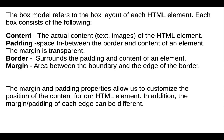The box model refers to the box layout of each HTML element. Each box consists of the following: first is content — the actual content like text or images of the HTML element. Next is padding — the space in between the border and content of an element. Next is border — which surrounds the padding and content of an element. Next is margin — the area between the boundary and the edge of the border.